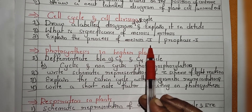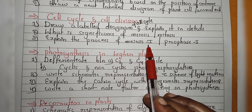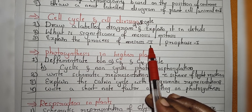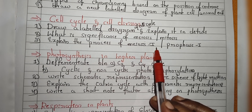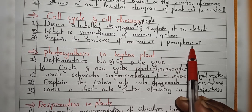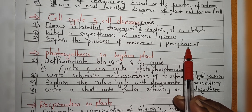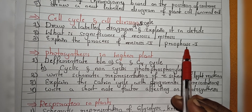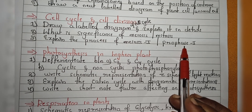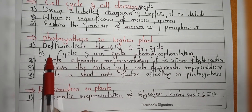Third topic is: explain the process of meiosis 1. You have to explain the whole meiosis 1 — for example, prophase 1, metaphase 1, anaphase 1, telophase 1. Sometimes they will ask only on prophase 1, in which case you have to write the sub-stages of prophase 1: leptotene, zygotene, pachytene, diplotene, and diakinesis.